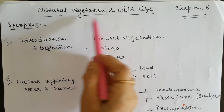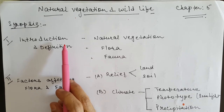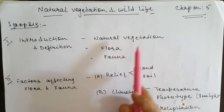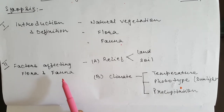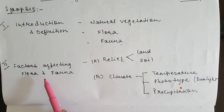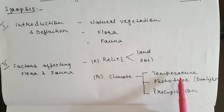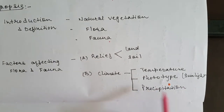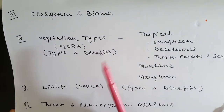Let's start with a brief synopsis of the chapter Natural Vegetation and Wildlife. We will start with an introduction wherein we will be studying about varied species of plants, vegetation, wildlife and animals in India, and some definitions such as natural vegetation, flora and fauna. The vegetation, flora, fauna and animal life are interdependent, and there are various factors which affect them. These are broadly categorized into relief, which includes land and soil, and climatic factors such as temperature, type of sunlight and precipitation. In the next subhead, we will be studying about the ecosystem and biome.